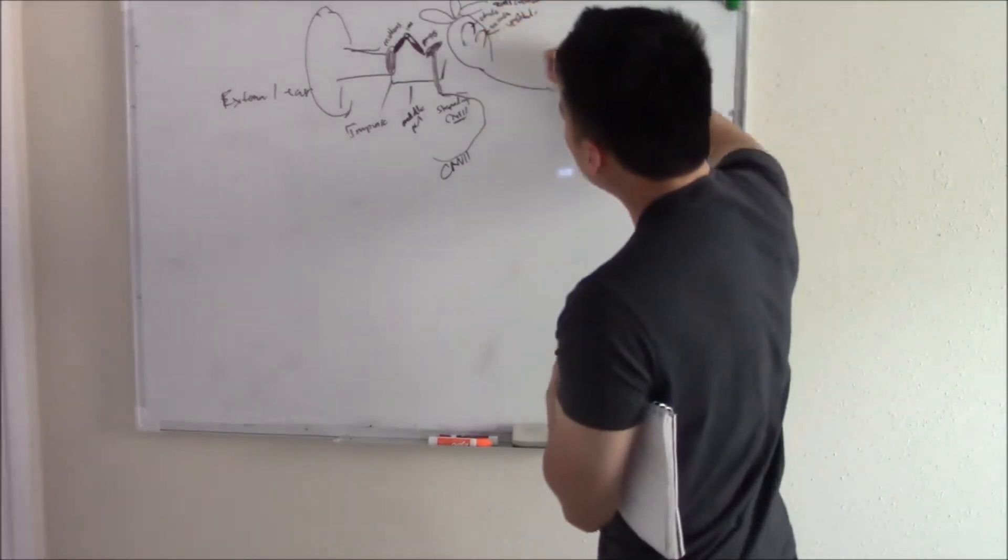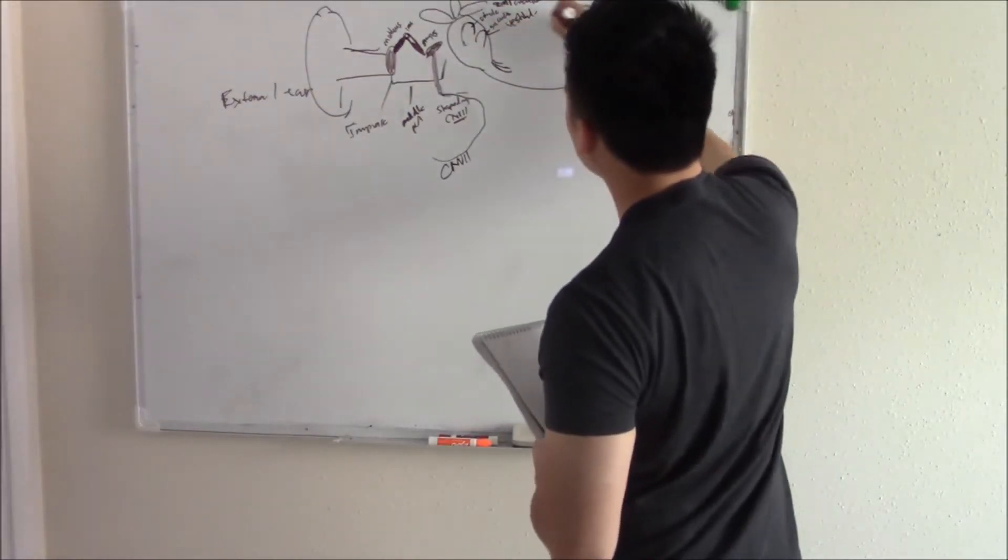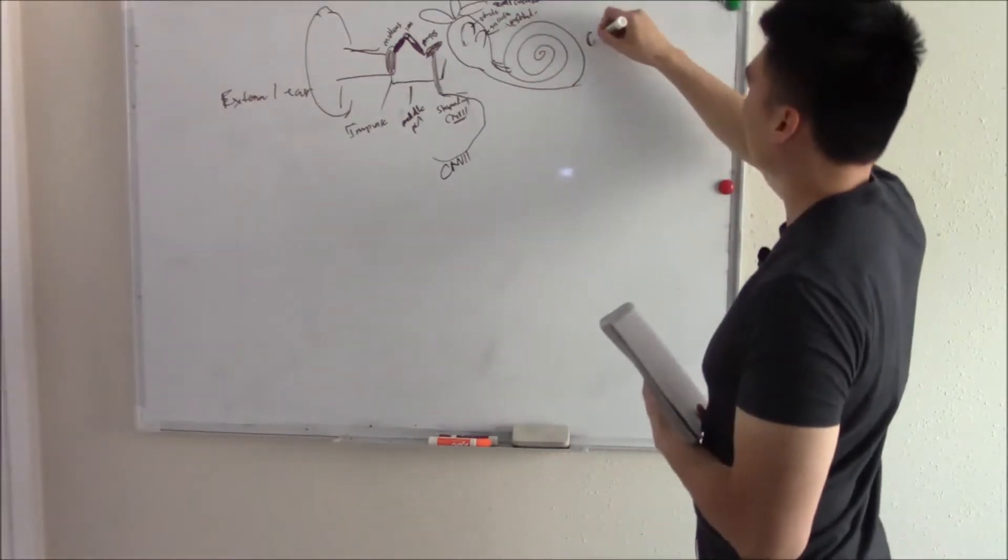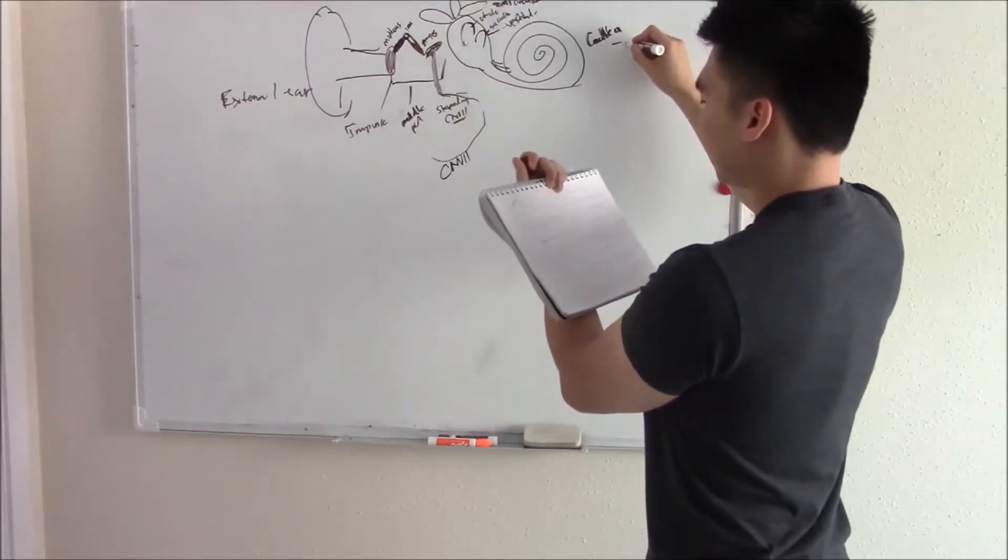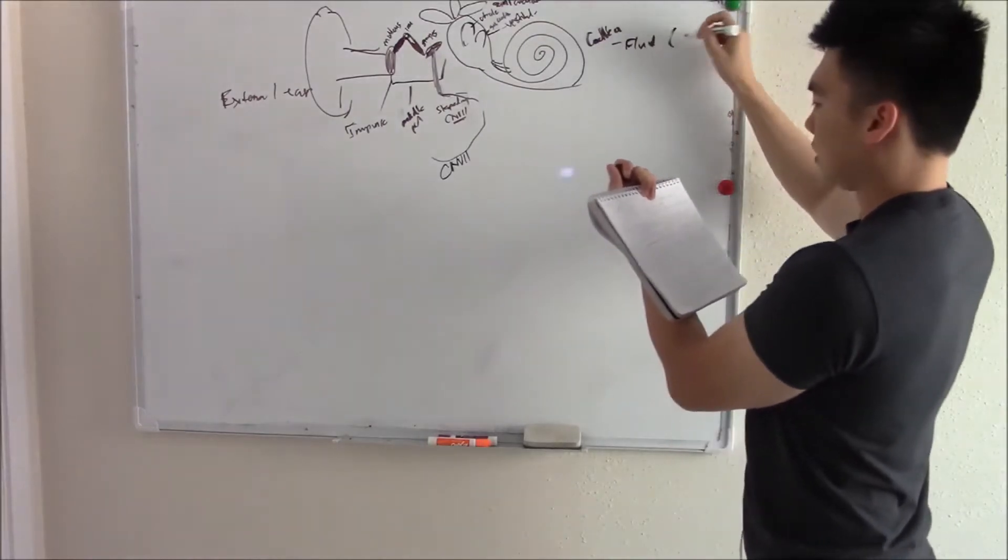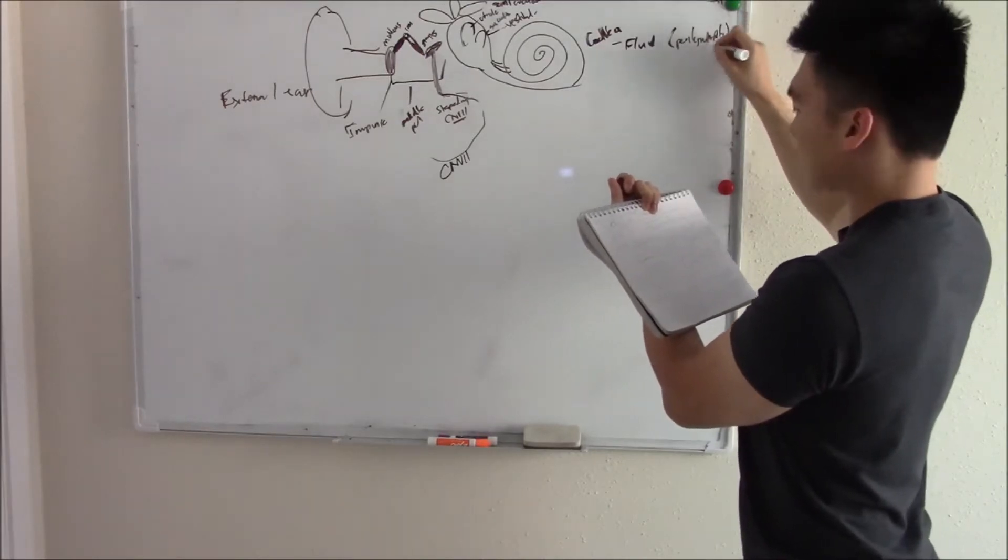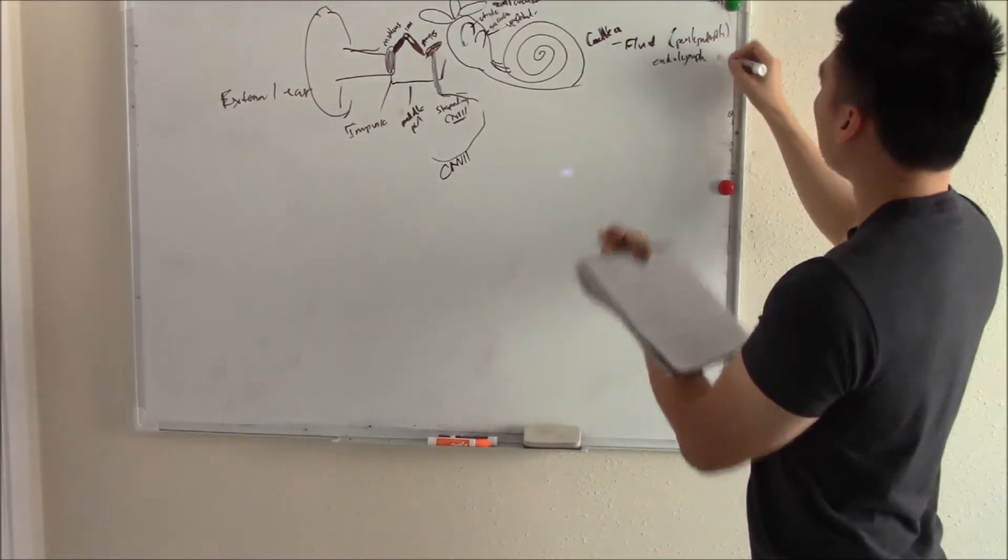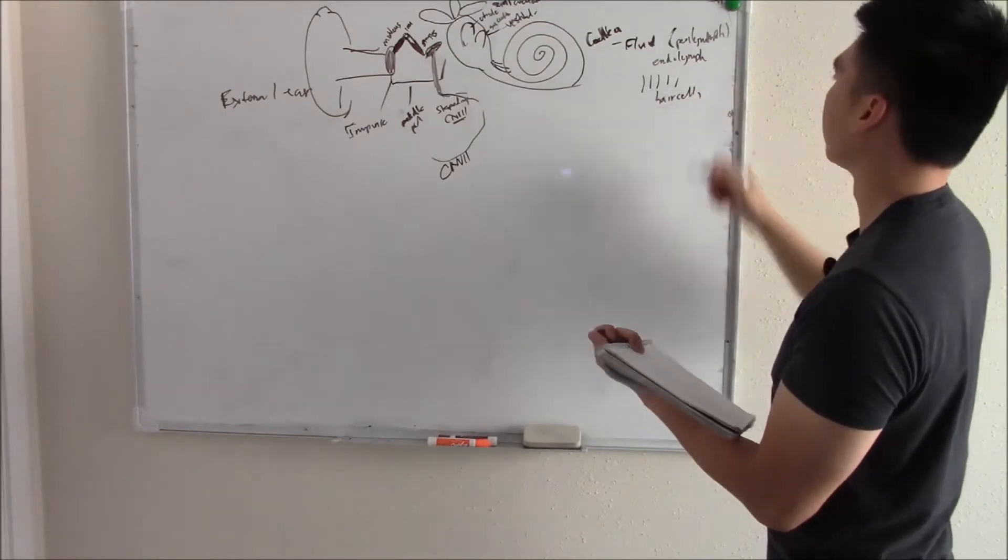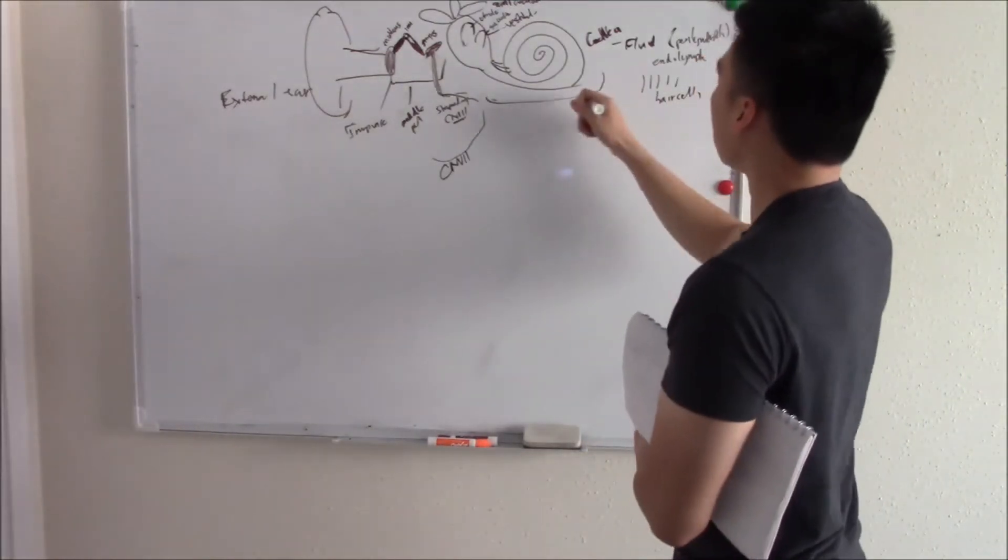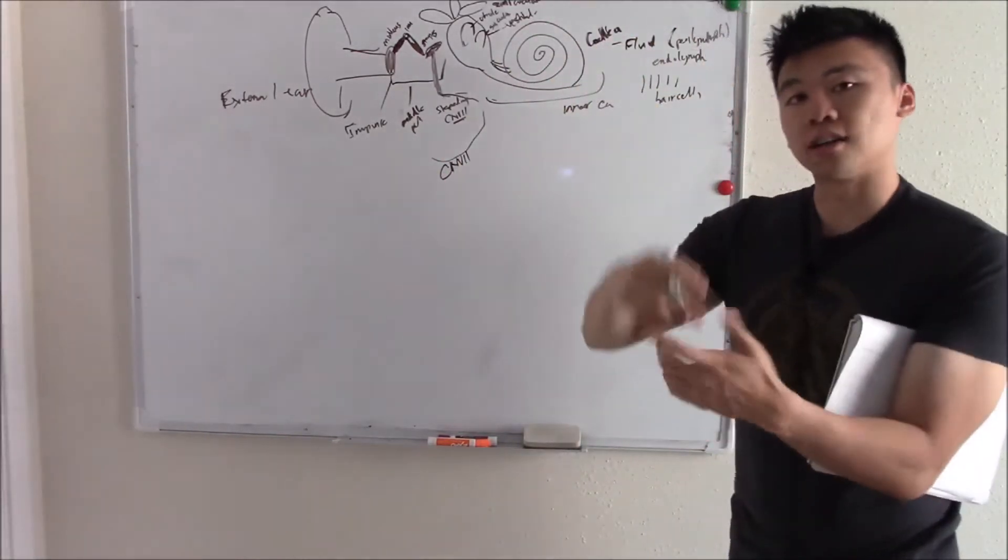And then last but not least, at the end of your vestibule, you have this giant curled structure called your cochlea. And your cochlea is filled with fluid. Things like perilymph. Things like endolymph. And in this fluid, you have these projections called hair cells. So just keep that in mind. That is your inner ear. And that is actually your ear. This is your auditory pathway.